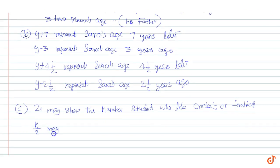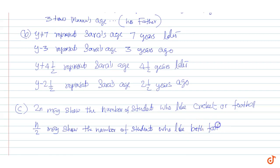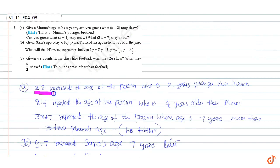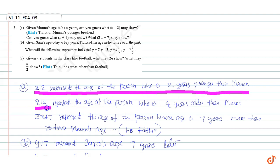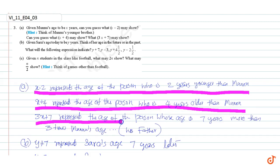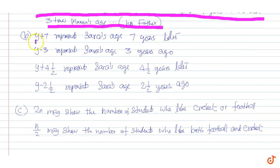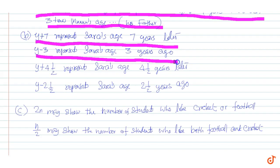2n may show the number of students who like cricket or football. n by 2 may show the number of students who like both football and other games like cricket. These are our answers.